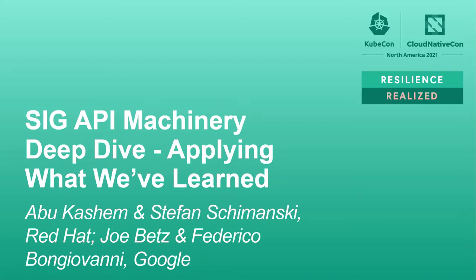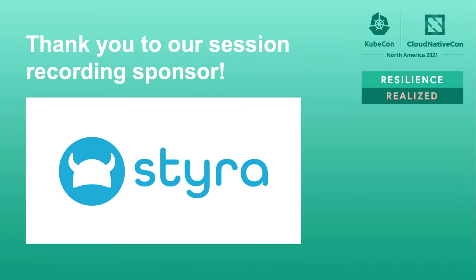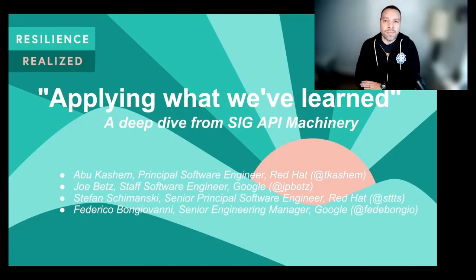Hello everybody, and welcome to our 2021 SIG API Machinery Maintainer's Track. My name is Federico Bongiovanni, and I'm the co-chair of SIG API Machinery in Kubernetes. We named our talk today 'Applying What We Have Learned,' because on one hand we are going to talk about server-side apply, a feature that has just graduated to GA in 1.22. And on the other hand, we are also going to share some learnings and practical experiences on Priority and Fairness.